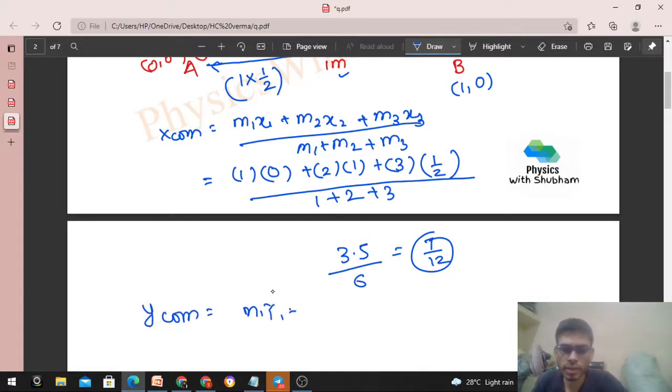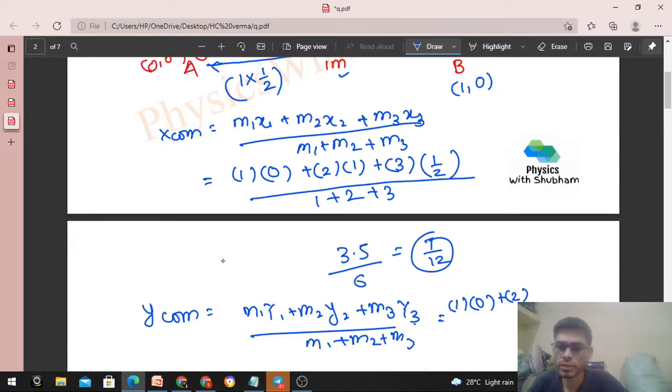Now for y-coordinate, we'll calculate (m₁y₁ + m₂y₂ + m₃y₃) / (m₁ + m₂ + m₃). m₁ is 1, y-coordinate is 0, plus m₂ is 2, y-coordinate is 0.